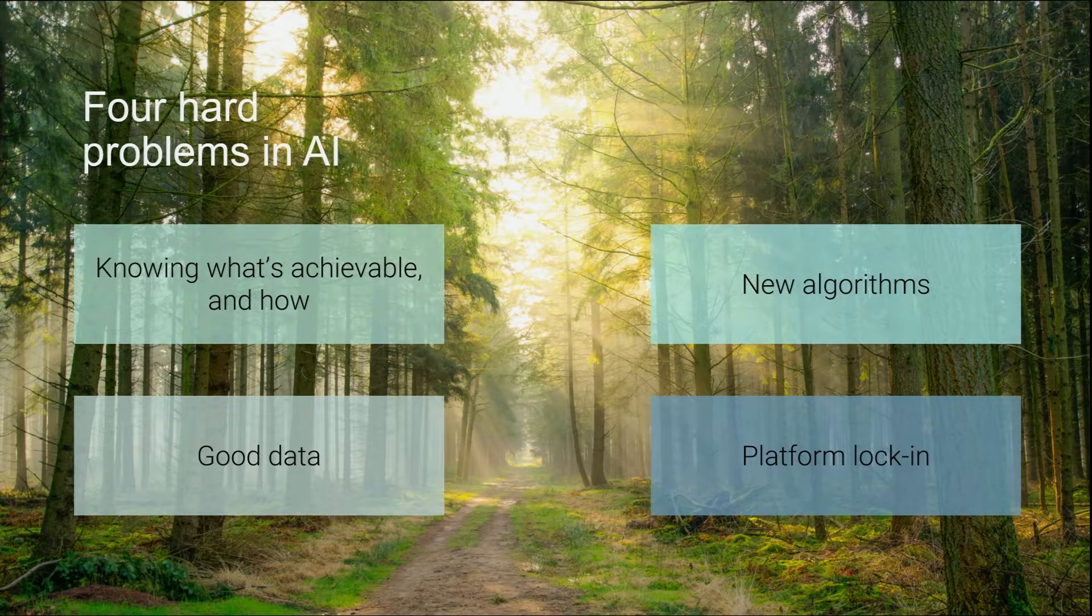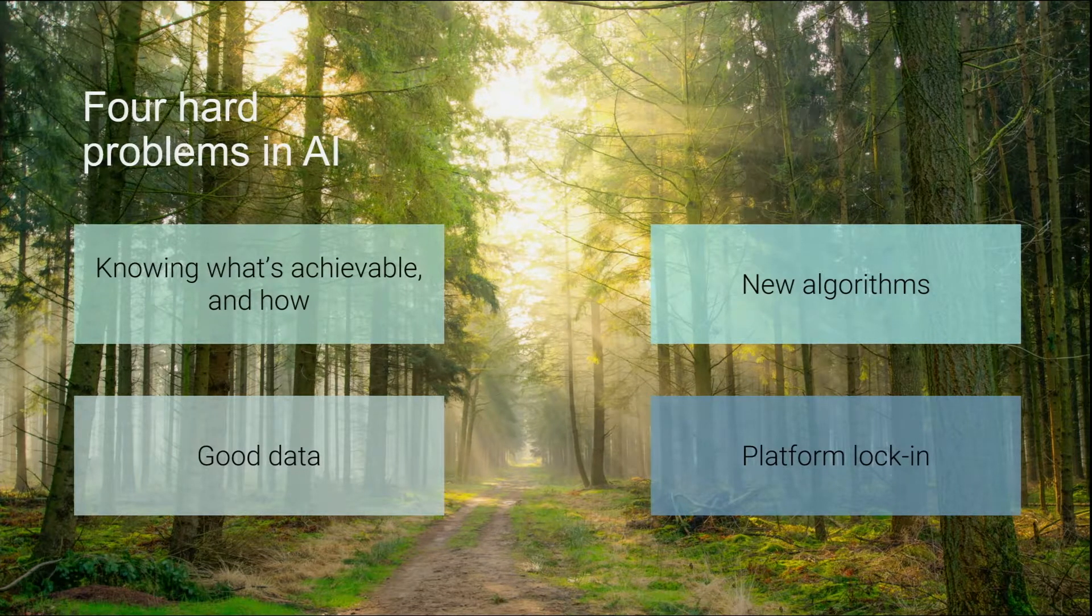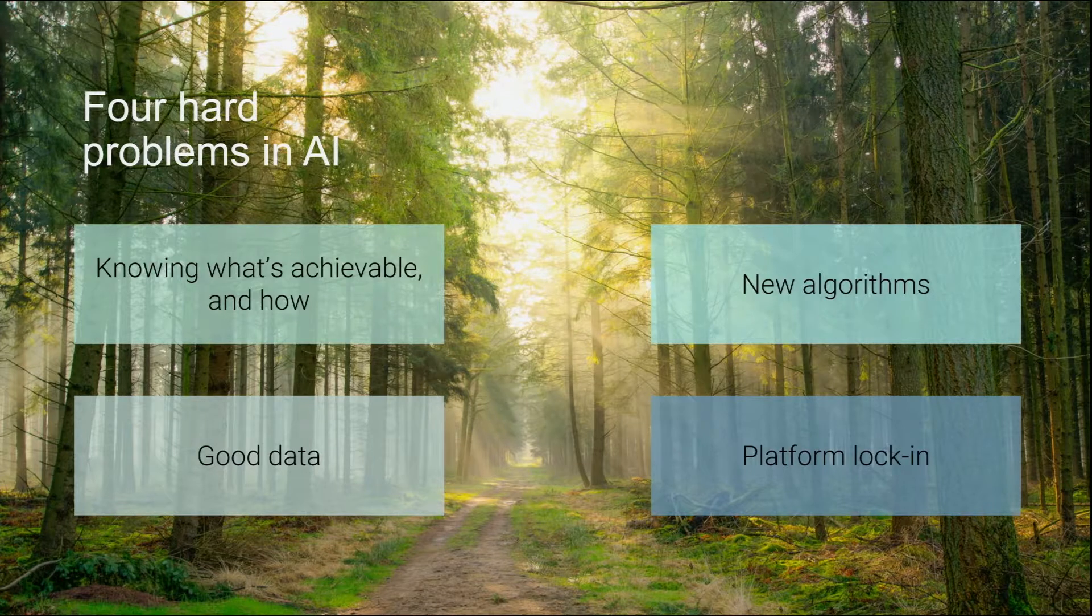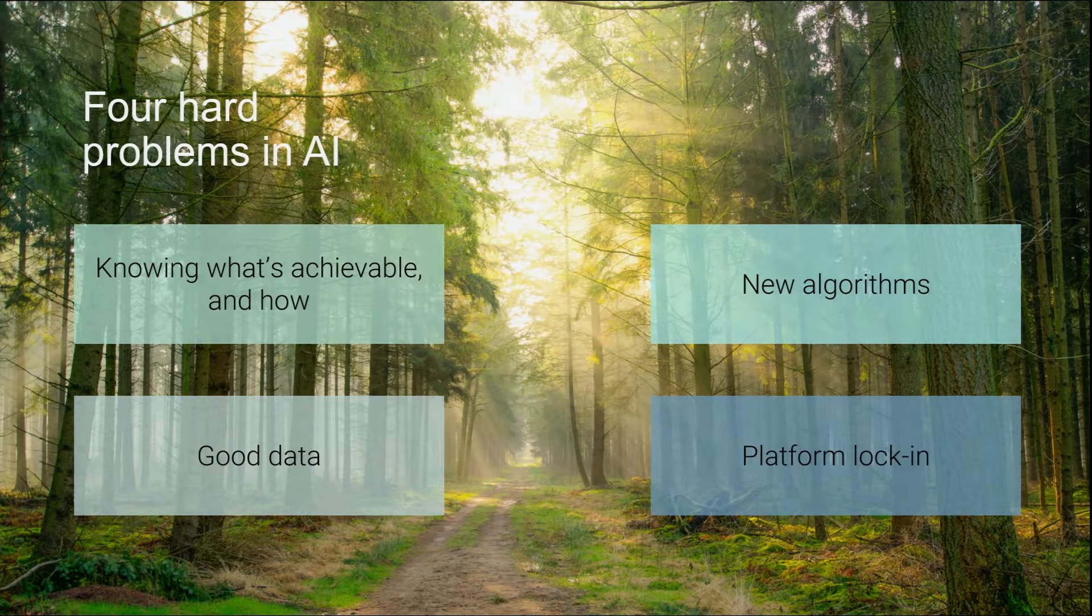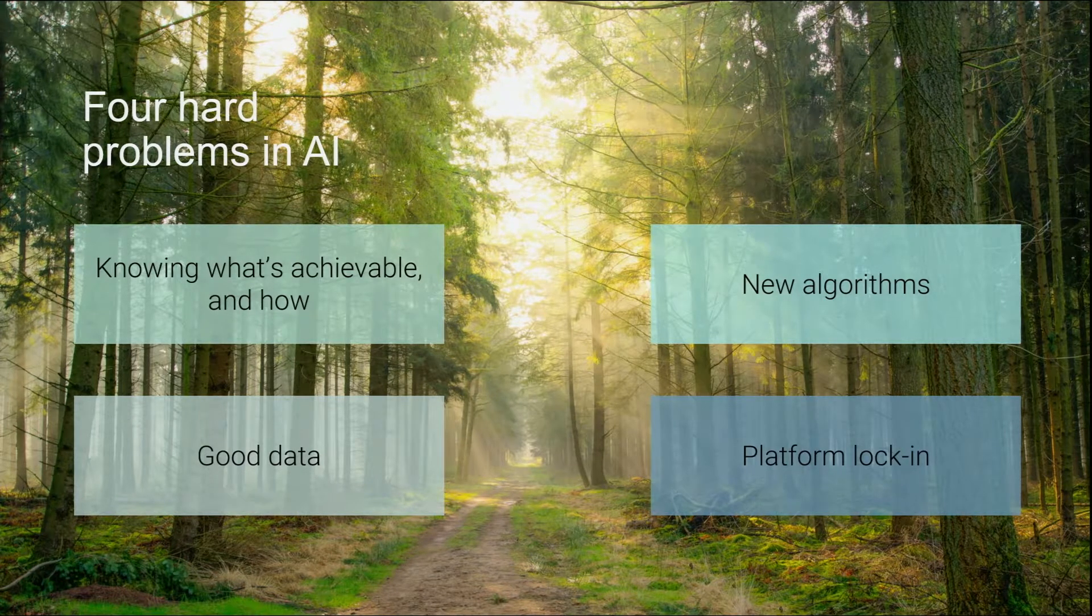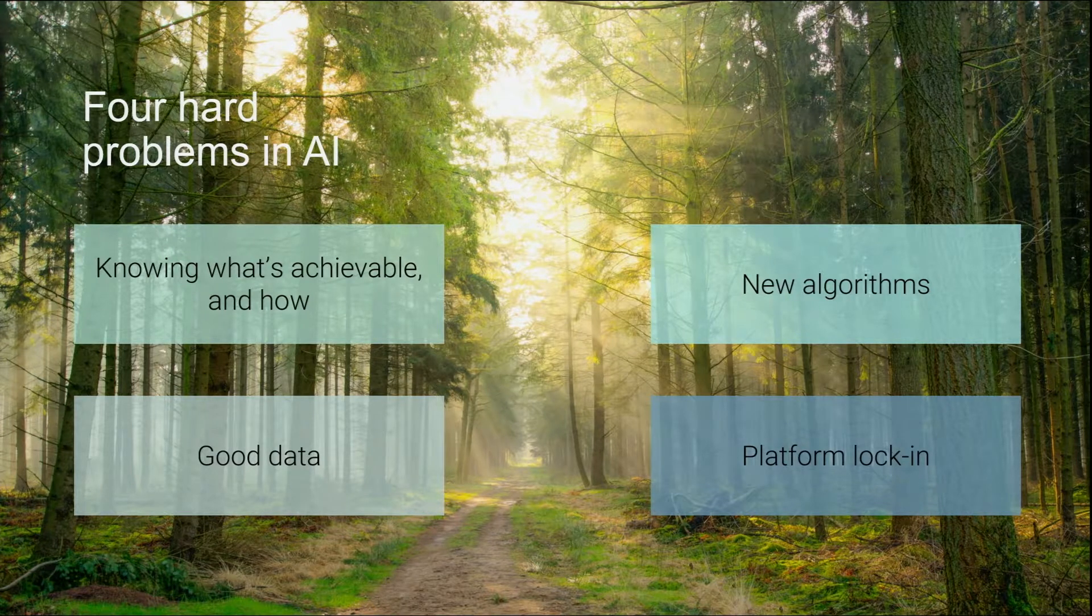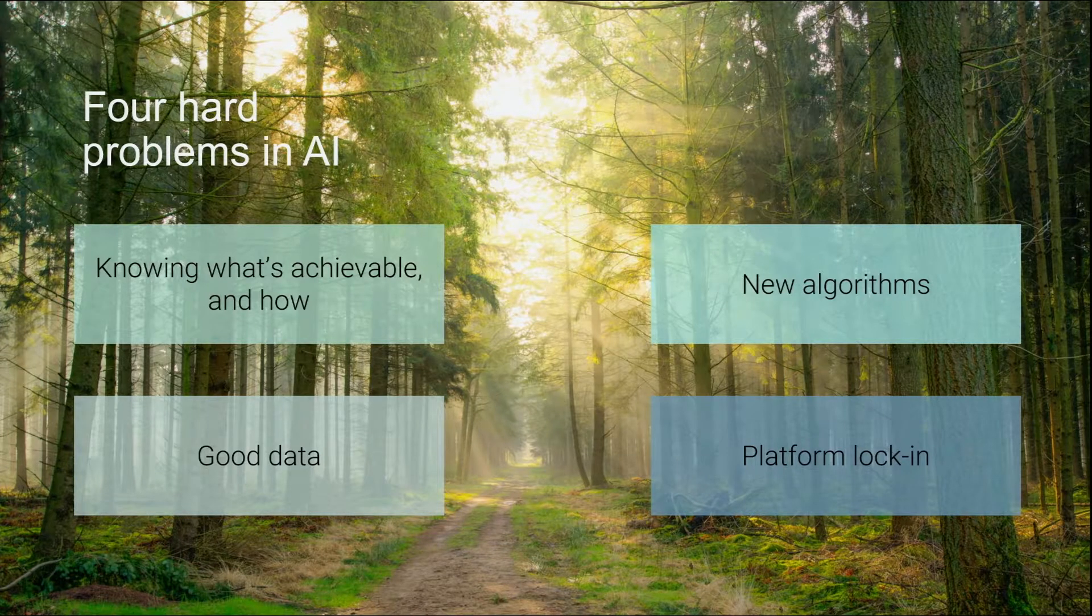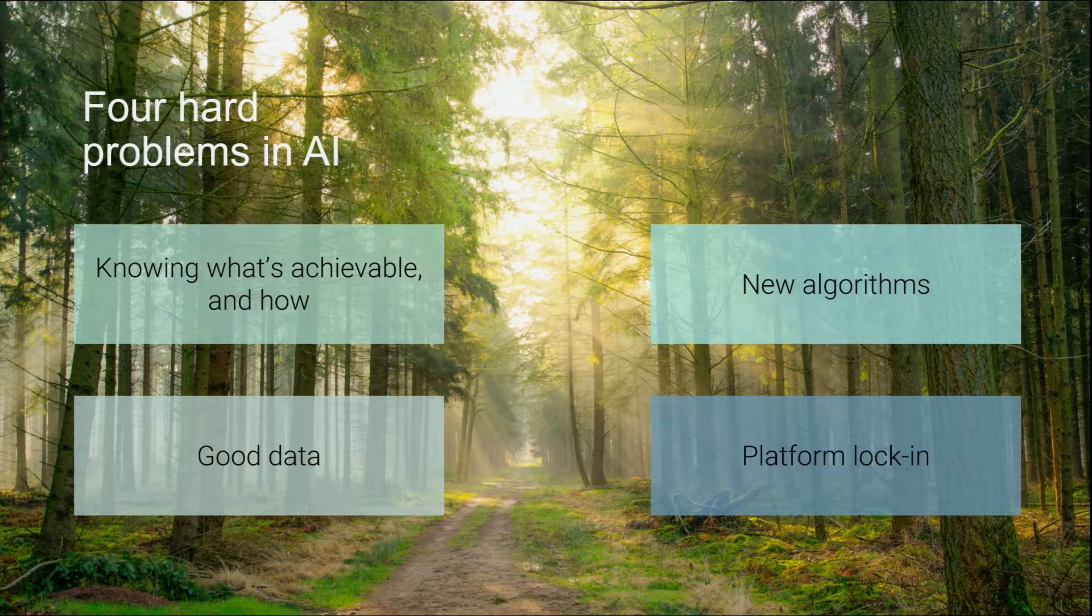I'm going to talk now about four hard problems with AI. The first big challenge is actually knowing what you can do and how. If you're trying to do image recognition or speech recognition, those are fairly well-trodden paths. But if you're an enterprise with business processes that you want to improve or to automate, it's a much harder problem.